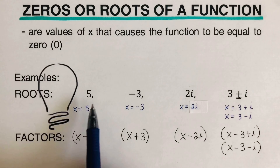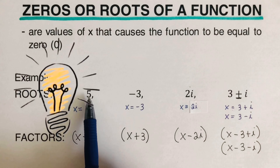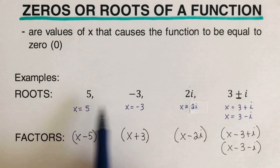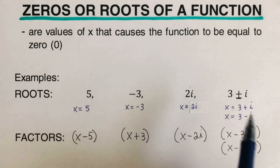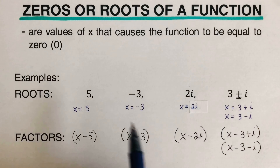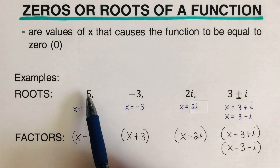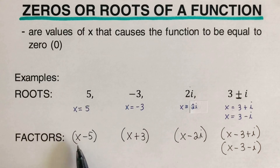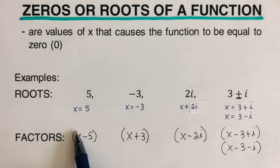This is how we change roots into factored form. The trick is: given roots in either notation, just switch the sign of the root, place it next to x, and put these two terms inside parentheses as a binomial.